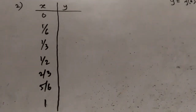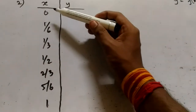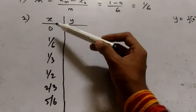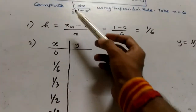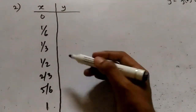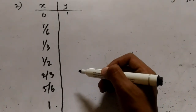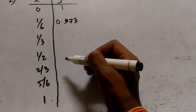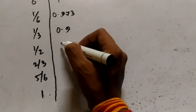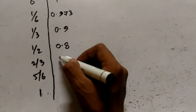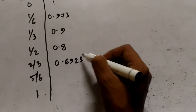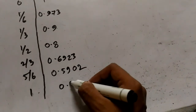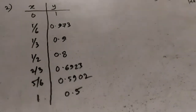The first term under column x must be x0 and the last term must be xn. The corresponding y values are: for x = 0, y = 1; for x = 1/6, y ≈ 0.973; for x = 1/3, y = 0.9; for x = 1/2, y = 0.8; for x = 2/3, y ≈ 0.6923; for x = 5/6, y ≈ 0.5902; and for x = 1, y = 0.5.